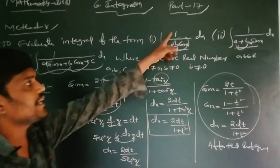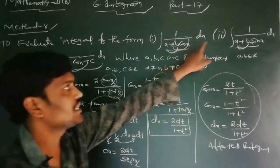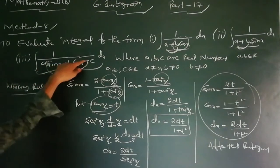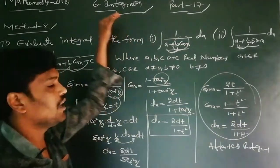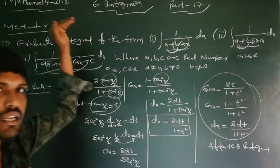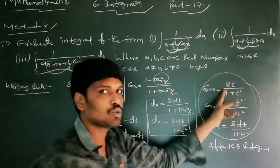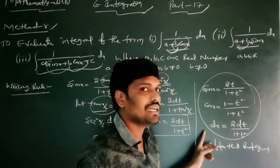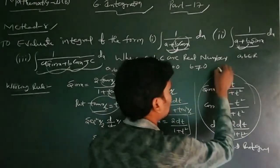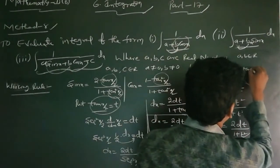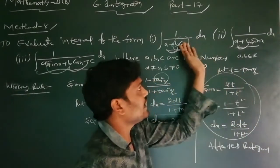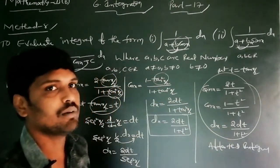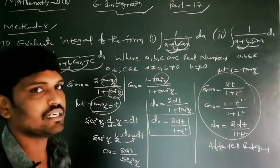Method A applies to integrals of the form 1/(A + B cos x), 1/(A + B sin x), and 1/(A sin x + B cos x + C). In Method A: sin x = 2t/(1+t²), cos x = (1-t²)/(1+t²), dx = 2 dt/(1+t²), and t = tan(x/2) is substituted into any one of the three cases, then integration is performed using any one method.